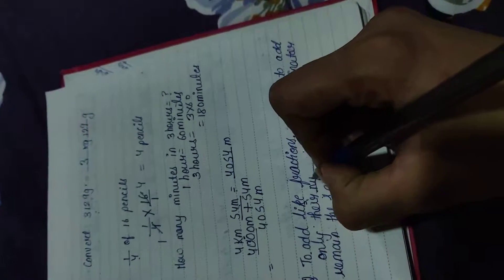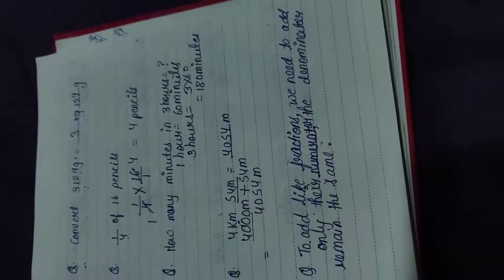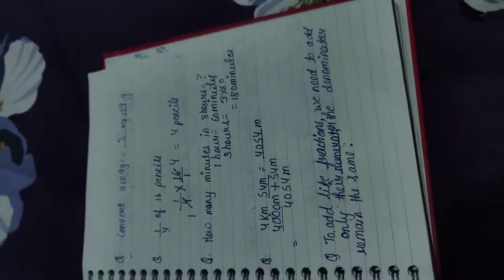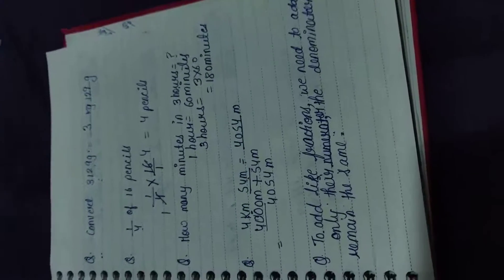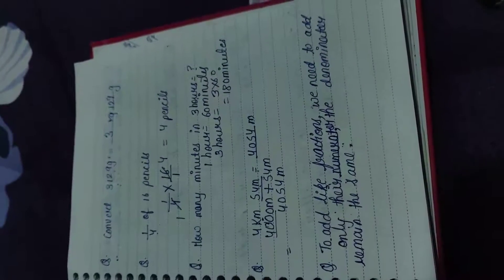Hum humesha numerator ko add karte hain. Maine aapko bataya tha na ki denominator check kar lena ki dono same hain ya nahi. Aur phir jab woh same hote hain, to hum kya add karte hain? Upar wala yani numerator. So to add like fractions we need to add only their numerator.